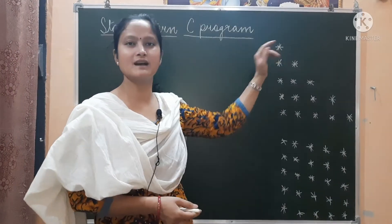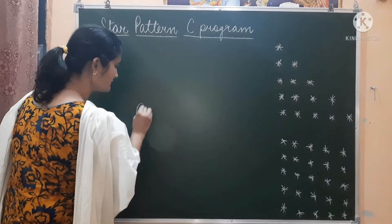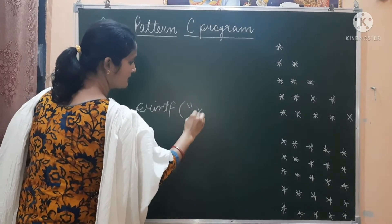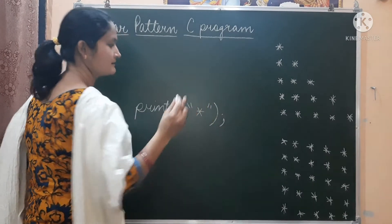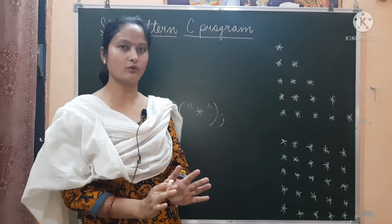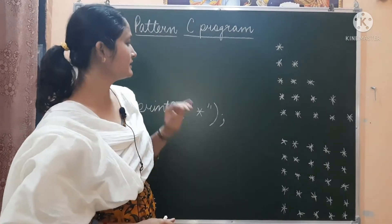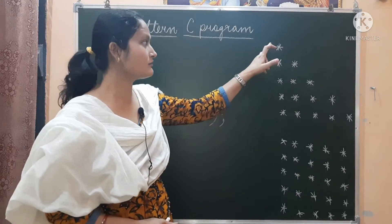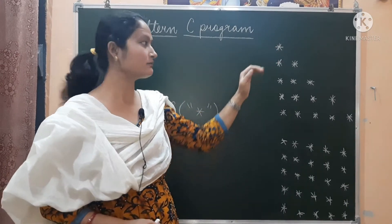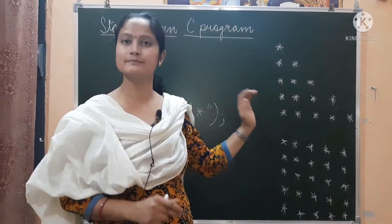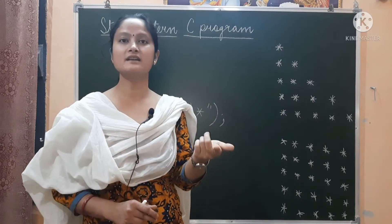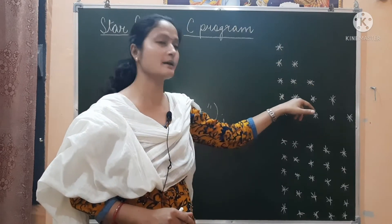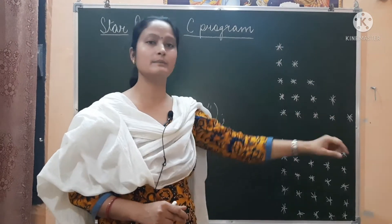Now we know to print a star we simply write printf. The logic is the same as before with a slight change. We discussed that we used two loops yesterday — one was the outer for loop working for the number of lines, and one was the inner loop used for printing these stars and the number of times a star will be printed.